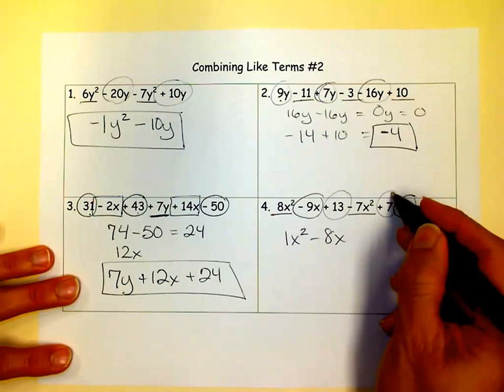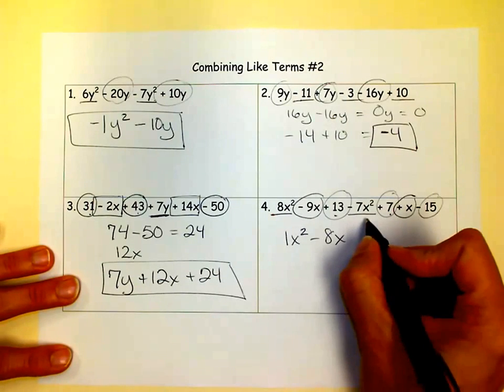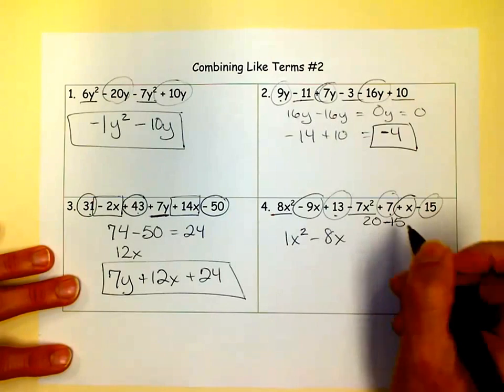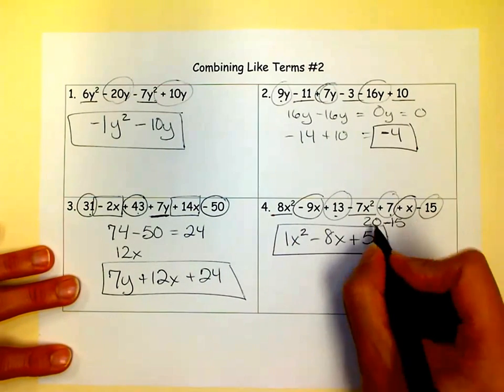And finally with our numbers, we have 13 plus 7, which is 20. And then we have to minus 15. And 20 minus 15 is 5. And since it's a positive 5, I put plus 5. And that's our answer.